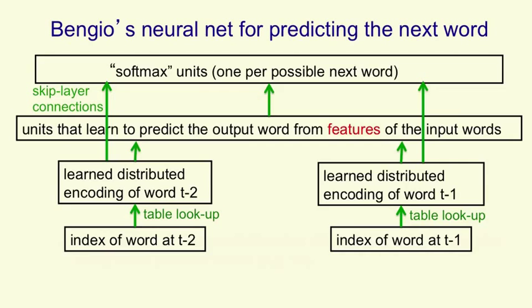You can then use those distributed representations via a hidden layer to predict via a huge softmax what the probabilities are for all the various words that might come next. One extra refinement that makes it work better is to use skip layer connections that go straight from the input words to the output words. Because the individual input words are individually quite informative about what the output word might be. Bengio's model was actually slightly worse than trigrams at predicting the next word, but it was in the same ballpark. And if you combined it with trigrams, it improved things.